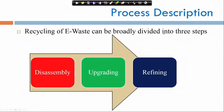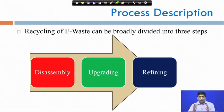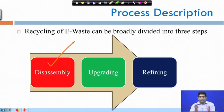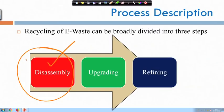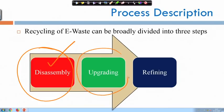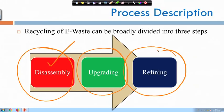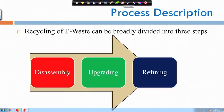Recycling can be broadly divided into three steps. First, you disassemble the electronics — basically taking it apart, unscrewing the CPU casing, for example. Then you do salvaging: looking at parts from three or four old computers to make one working computer — that is upgrading. Then refining: using a refining process to get the material out. We will talk about each of these in a little bit of detail.